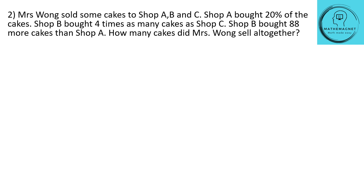Let's look at the next question. Mrs. Wong sold some cakes to shops A, B and C. Shop A bought 20% of the cakes. Shop B bought four times as many cakes as shop C. Shop B bought 88 more cakes than shop A. How many cakes did Mrs. Wong sell altogether? Out of 100% of the cakes, shop A bought 20% and the remaining was bought by shops B and C.